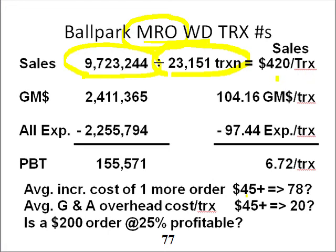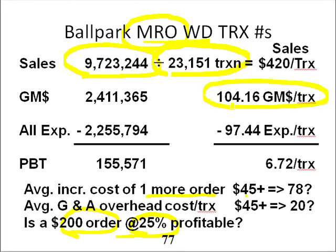$420 in sales per transaction, $104 in margin dollars per transaction, less $97 in expenses gives you $6.72 per transaction. The question is: what if we got one more order that had $200 of sales in it at 25%? That's $50 in margin. Would we say, well, one more order — we have $104 of cost to take care of an order, so we lost $64 on that order?